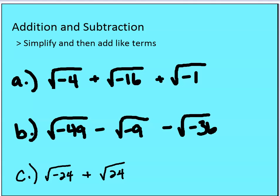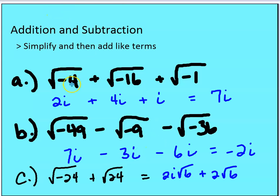We want to simplify and add like terms. I asked you to pause and see if you could manage this addition and subtraction piece. I'm going to show you the answers. The first one: the square root of negative one times the square root of four — that's 2i plus 4i plus i, which is equal to 7i. Second: 7i minus 3i minus 6i is equal to negative 2i. The last one: the square root of negative one times the square root of four times the square root of six is 2i root six, plus the square root of four times the square root of six is 2 root six — we leave that as 2i root six plus 2 root six.